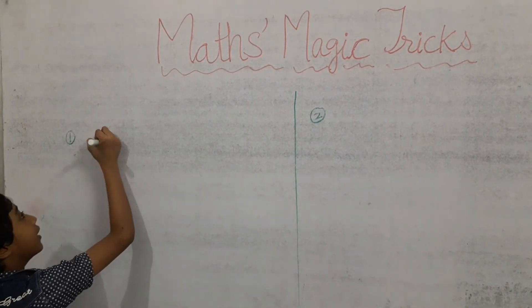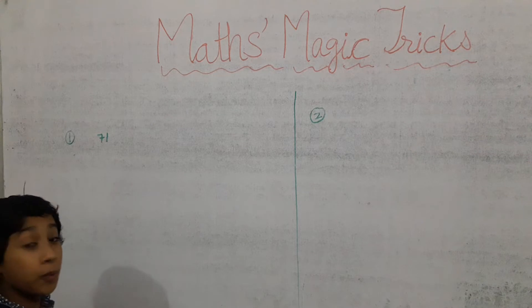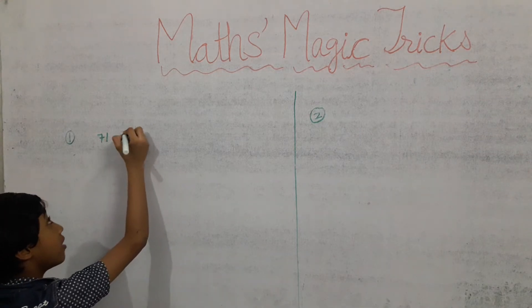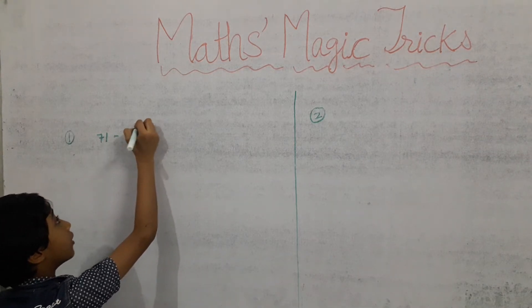We have the number seventy-one. We have to minus this in the mixed fraction four and three-by-six.